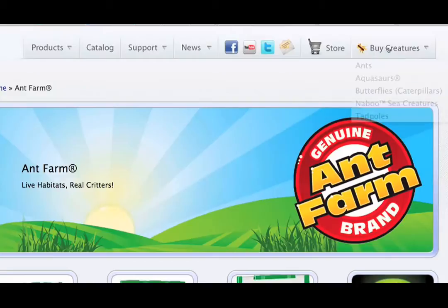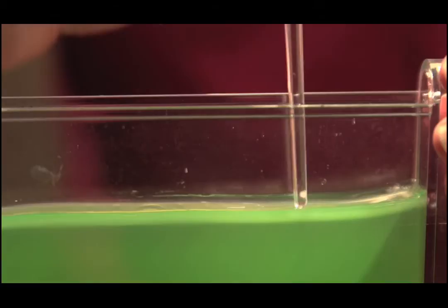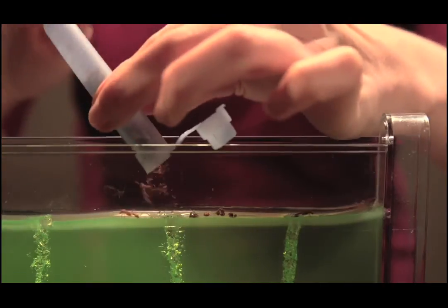To get started, just order your ants online and receive a tube of live harvester ants. Then, prep the gel using the starter tool and place the ants inside.